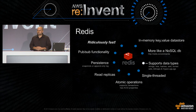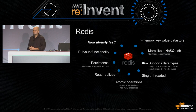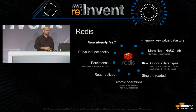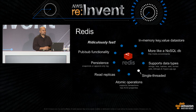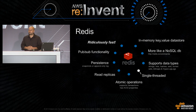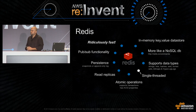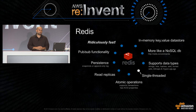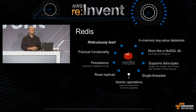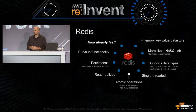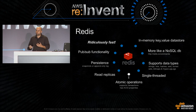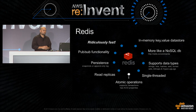Redis supports data types beyond just strings — it supports hashes, sets, sorted sets, and a variety of other things. It is single-threaded, and that isn't really a deterrent. It actually gives way to some interesting positives in the way that it behaves. One of those is that you can achieve atomic operations using Redis, which essentially gives it an ACID-like feel. And you don't have to worry about things like thread-locking.